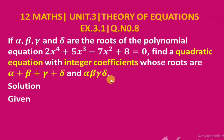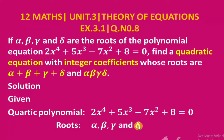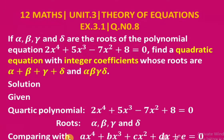By the given quartic polynomial 2x⁴ + 5x³ - 7x² + 8 = 0, the roots are alpha, beta, gamma, and delta. Comparing with the general form of the quartic polynomial ax⁴ + bx³ + cx² + dx + e = 0, we get a = 2, b = 5, c = -7.